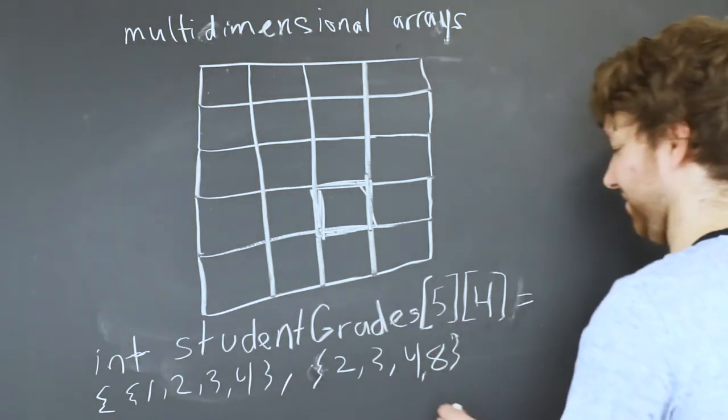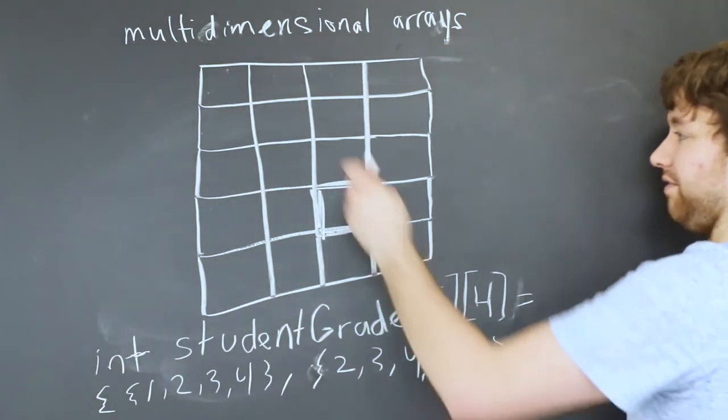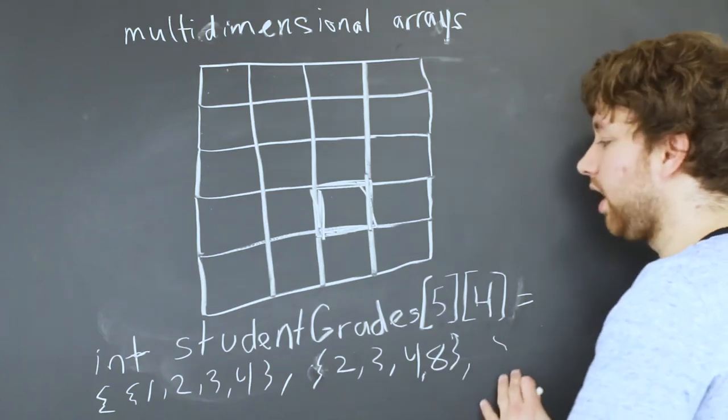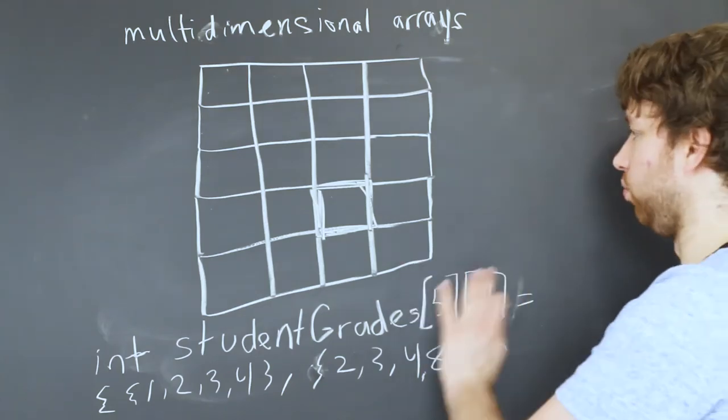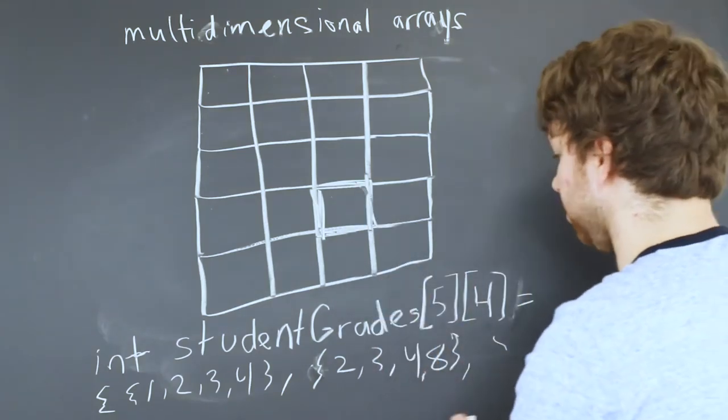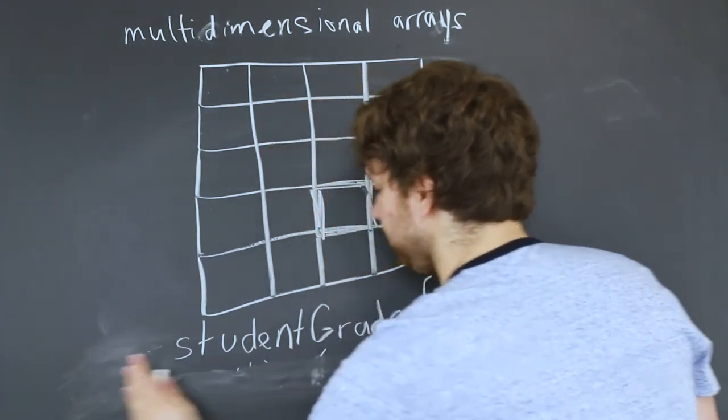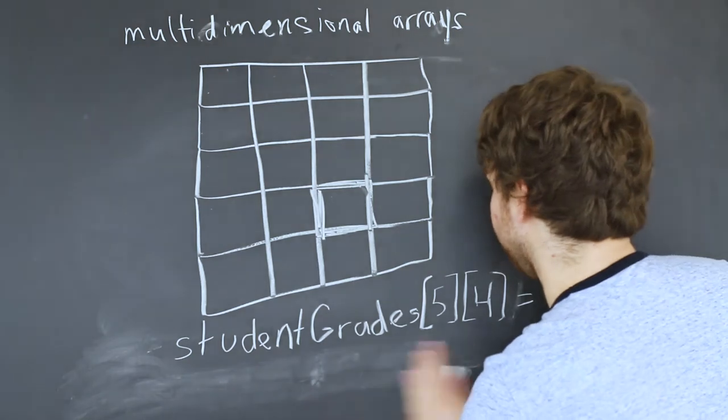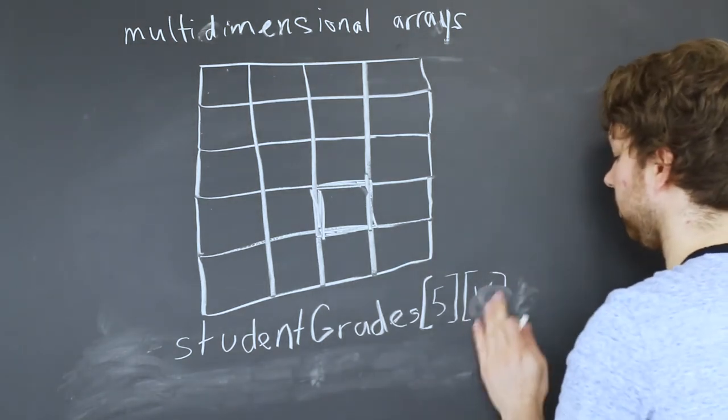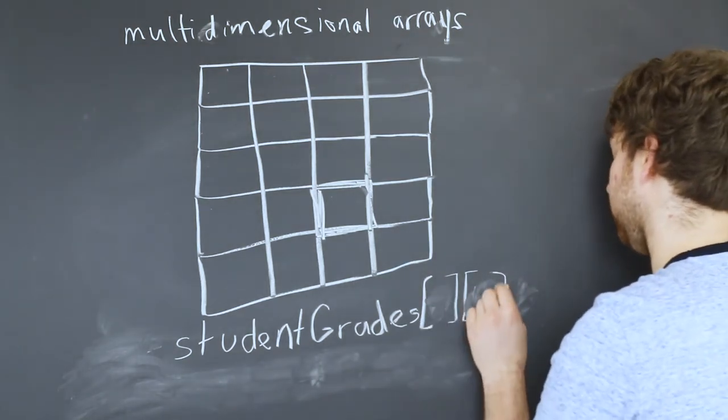Once you declare it, how do you go and reference one of the cells? That's what I want to show you guys now. So let me get rid of this and also get rid of the type. Now we're trying to reference one cell, and we're going to use the same similar structure.